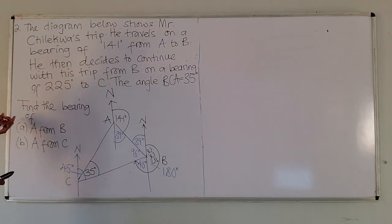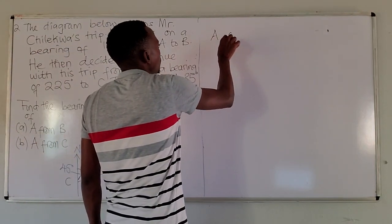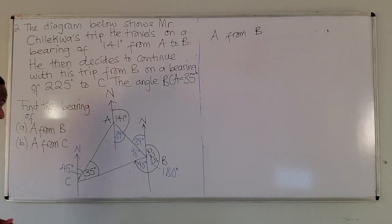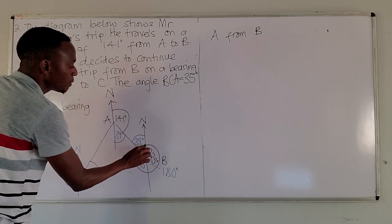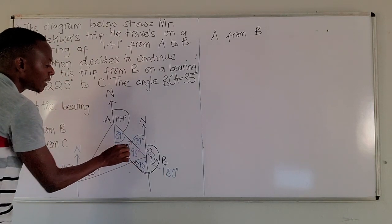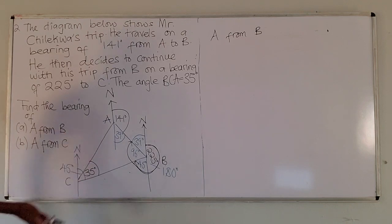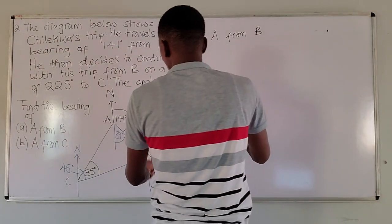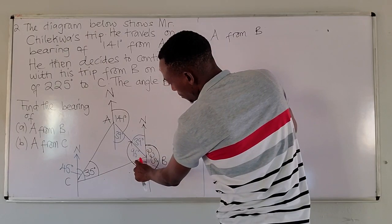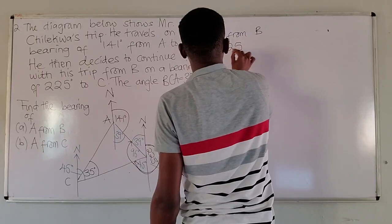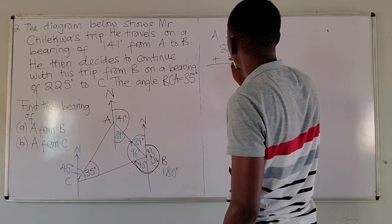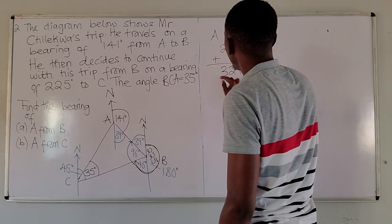Calculate the bearing of A from B. A from B - you go where it is from. From B, so we start moving from the north of B, moving in the clockwise direction, until we hit the line joining A and B. Because we know that from this point up to here it is 225, so 225 plus 96. This gives us 321 degrees. This is the bearing.